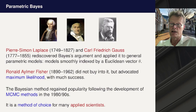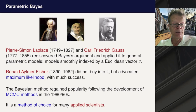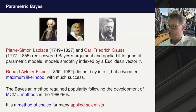Bayes was not alone — his method was reinvented by Laplace soon after, and Gauss also did statistics this way. With Fisher at the beginning of last century, another idea emerged: maximum likelihood. Fisher didn't like the prior distribution, so he advocated something depending only on the likelihood. The Bayesian method became popular again when computational methods were developed in the 1980s and 90s, and for many applied scientists it is the method of choice because Bayesian statistics is a natural way of thinking in terms of probabilities — if you can think of the correct prior.